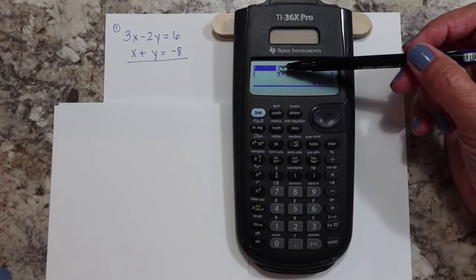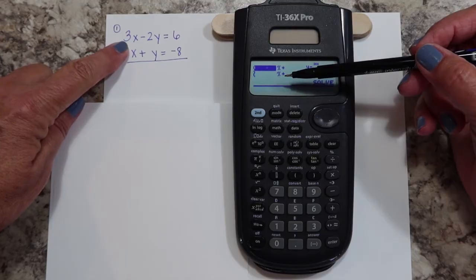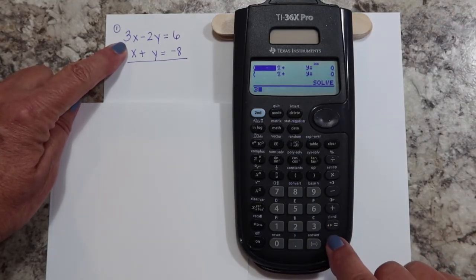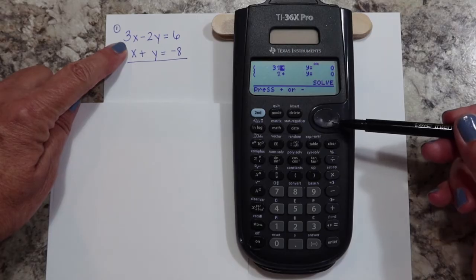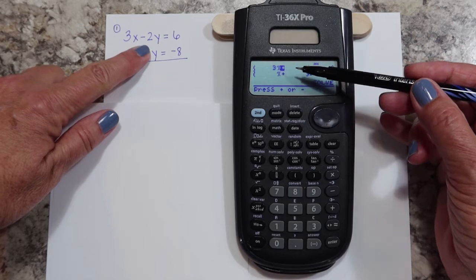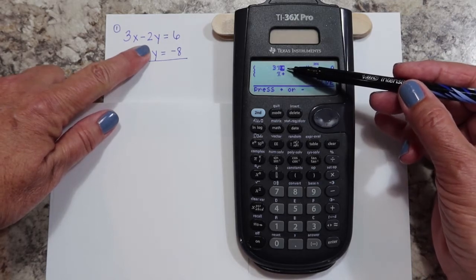Now, the coefficient of X is highlighted. This coefficient over here is three, so I'm going to hit the three. You can either hit enter or use your scroll over button.